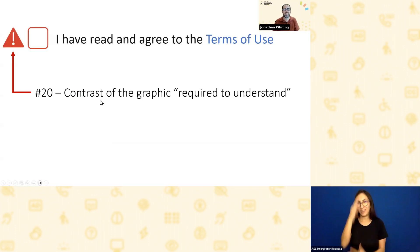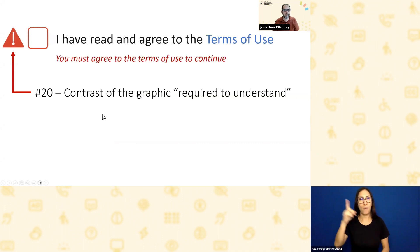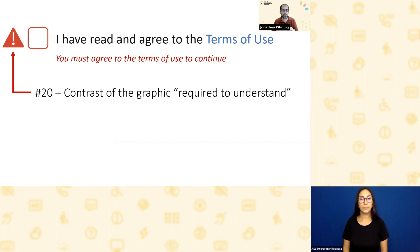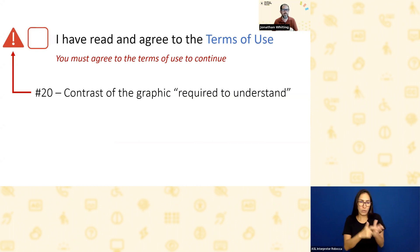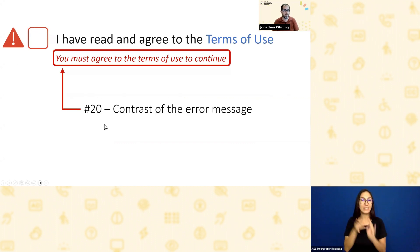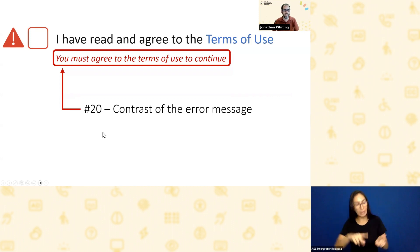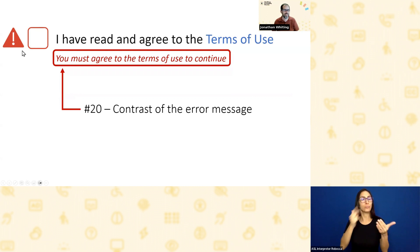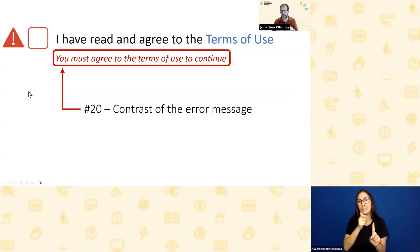One final thing: an error message — 'You must agree to the terms of use to continue.' You need 3 to 1 contrast if the graphic is required to understand what's going on. If it's an enhancement, there's no contrast requirement. In this case, the error message on its own is enough to tell you there's an error — it appeared, it wasn't there before, it tells you this is in an error state. So I would still need to test the contrast of the error message text. I'd highly recommend a good high-contrast alert icon, but the icon itself would not be strictly required.